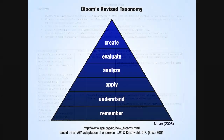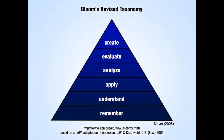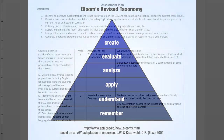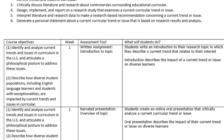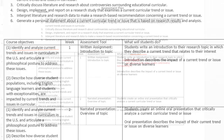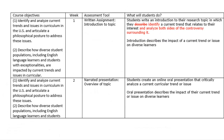Another consideration for alignment is the level of the objectives and assessments using Bloom's Taxonomy. For example, if one of your objectives for students is that they identify and analyze a concept, then there would not be alignment if students are asked to simply describe the concept. They would need to be asked to identify and analyze the concept.